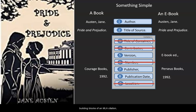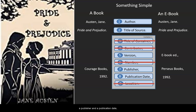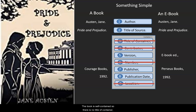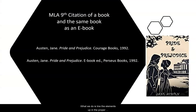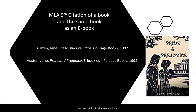Now let's start with an easy one — a book, and just for comparison, the same book as an e-book. You will see that both items have an author and a title, a publisher and a publication date. The only thing different in the citations is that the e-book has a version. The citations will end with the publication date because we are citing the book in its entirety and not a particular location within the book. The book is self-contained, so there is no title of container, no other contributor, and no number, so we leave all of those elements out. We line the elements up in the proper order, in the same font and size as the rest of our paper, with the proper punctuation indicated by the template. And here we have a book and e-book citation in MLA 9th edition.